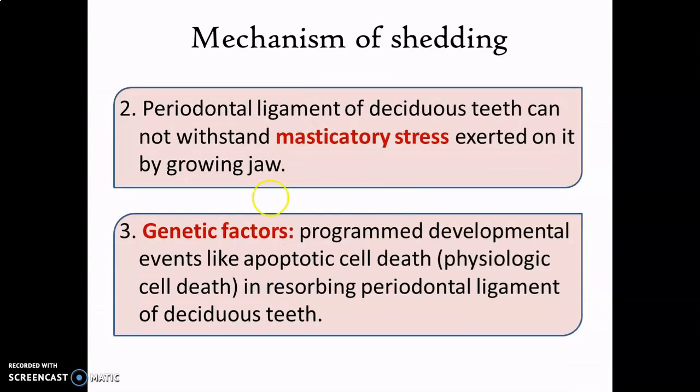Another probable mechanism is the increased masticatory stress exerted by the growing jaw on deciduous teeth. As jaws grow, the masticatory muscles strengthen and the masticatory forces increase. The periodontal ligament of the deciduous tooth fails to withstand this increased masticatory stress, which leads to its exfoliation or shedding. Finally, there can be genetic factors that control the process of shedding, as resorption of periodontal ligament tissue may be caused by apoptotic cell death. Apoptosis refers to cell death by normal physiological process, or developmentally and genetically programmed cell death.